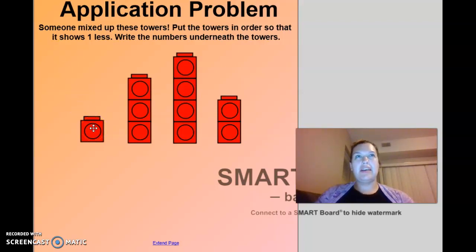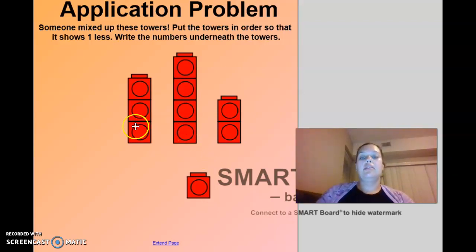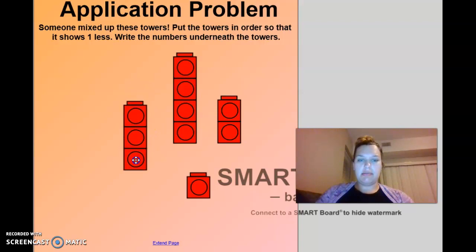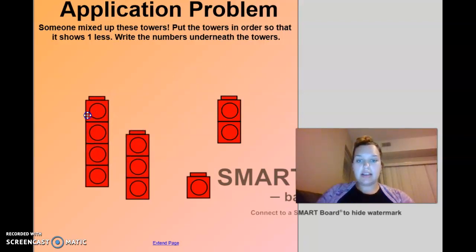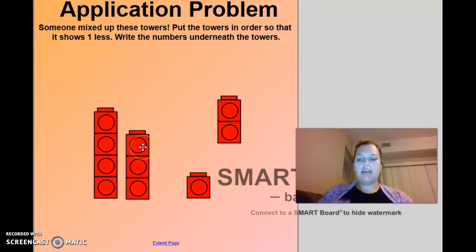So, one. Is that our smallest number or our biggest number? Our smallest number. I'm going to put it over here. Now we have one, two, three. Is one smaller or bigger than three? One is smaller. I'm going to put it down here in the middle. Then I have one, two, three, four. We just did a number that's one less than four. Three. So it has to go next to the three. Three. One less than three is two. Very good.